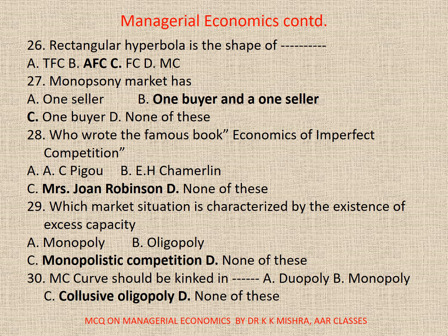29. Which market situation is characterized by the existence of excess capacity? A. Monopoly, B. Oligopoly, C. Monopolistic competition, D. None. Correct option is C. Monopolistic competition.